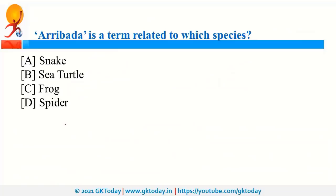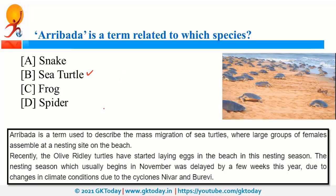Arribada is a term related to sea turtles, describing the mass migration of sea turtles where a large number of female sea turtles assemble at nesting sites on the beach. This was in news because cyclones Nevar and Burevi delayed the nesting season, which usually starts in November, due to cyclonic events and climate change conditions.